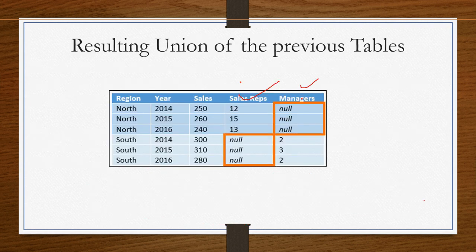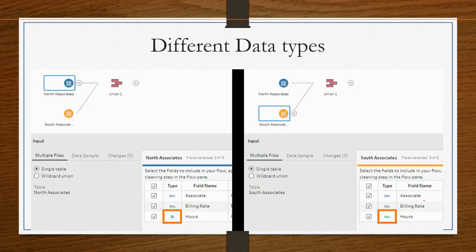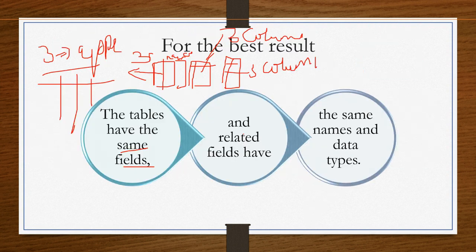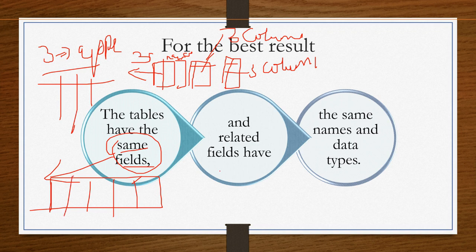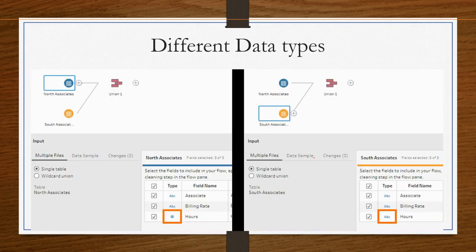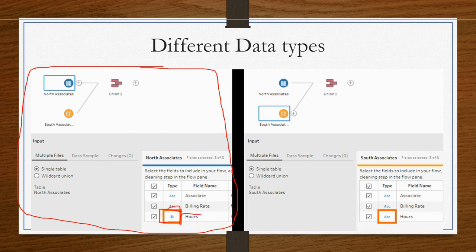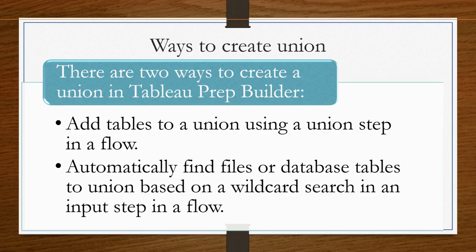So if you have a mismatched field, after performing union and appending two or more tables, the result will contain null values for the missing fields. Also, if you have different data types — for example, in one file 'hearts' is an integer (a number) but in another file 'hearts' is a string — then even there you will end up with confusion in the data.